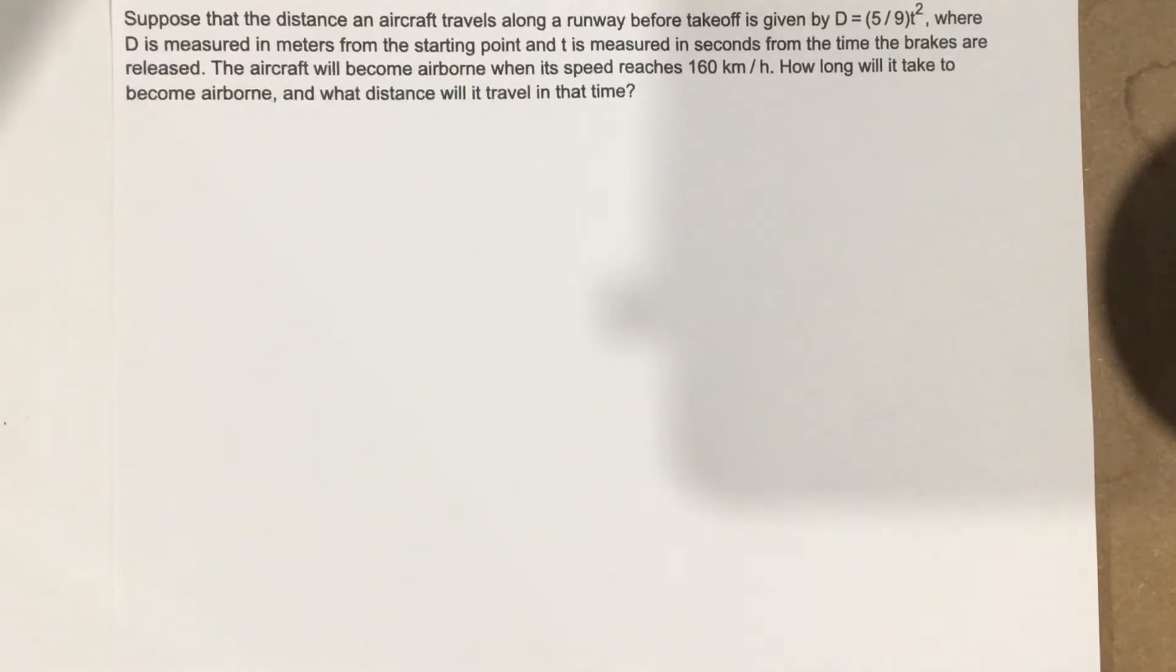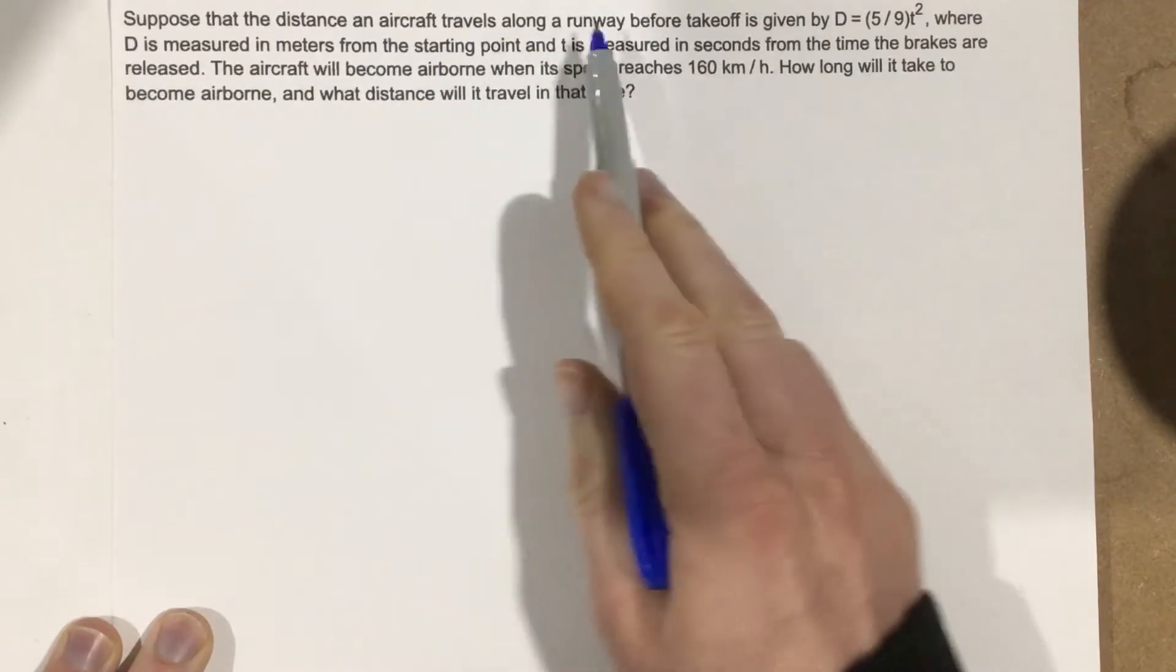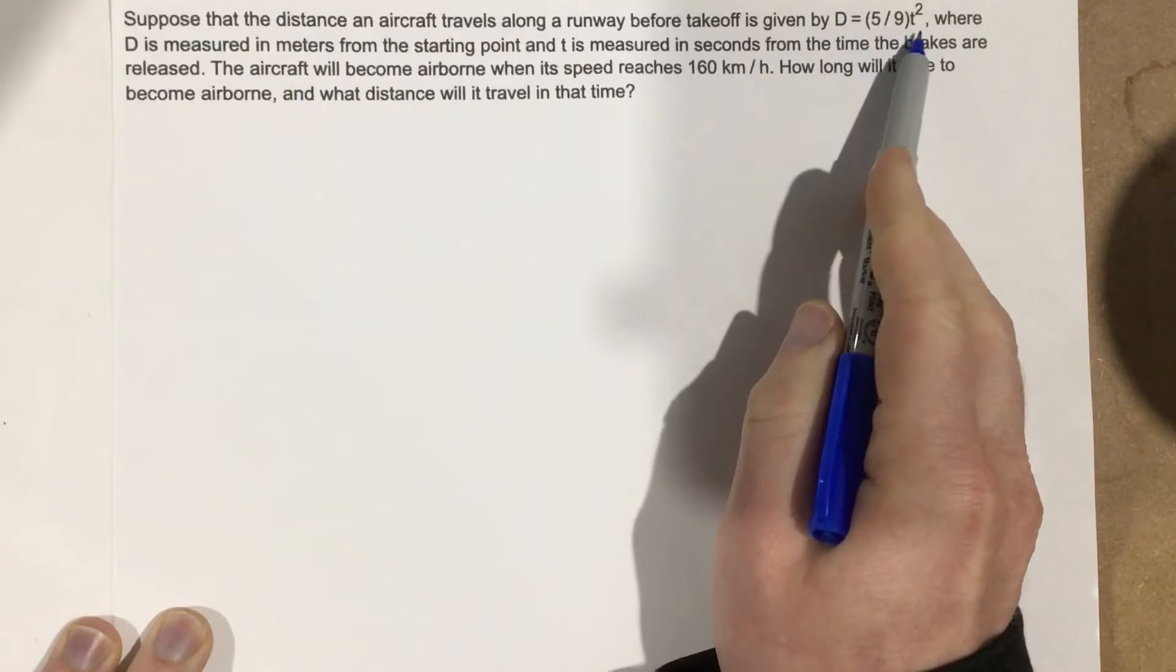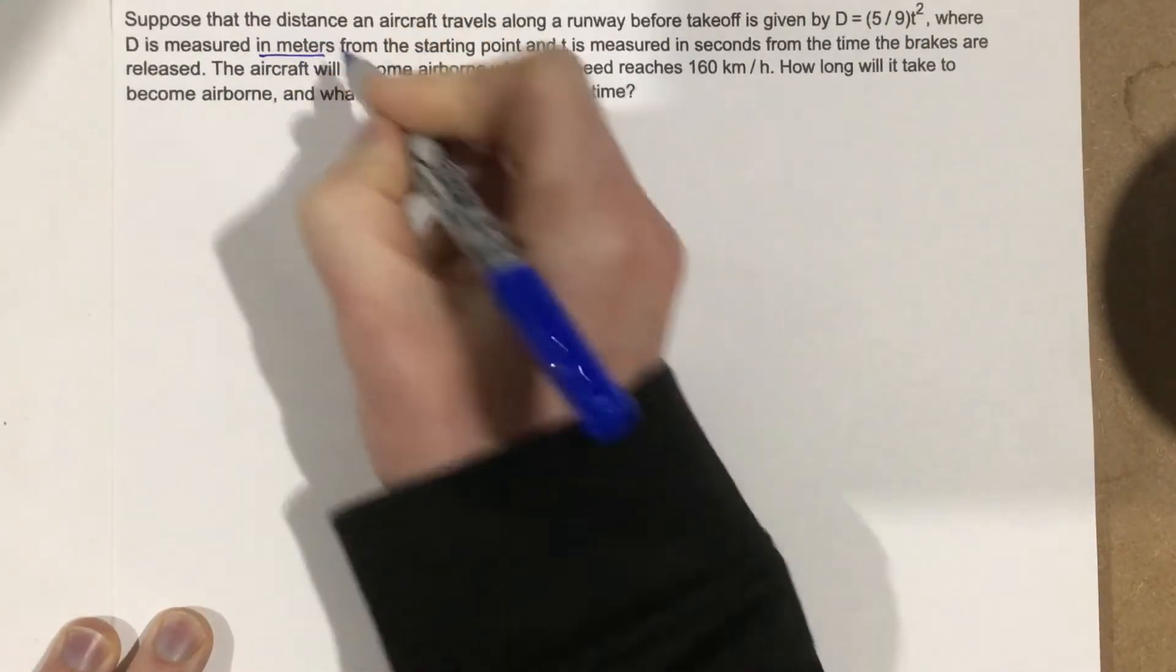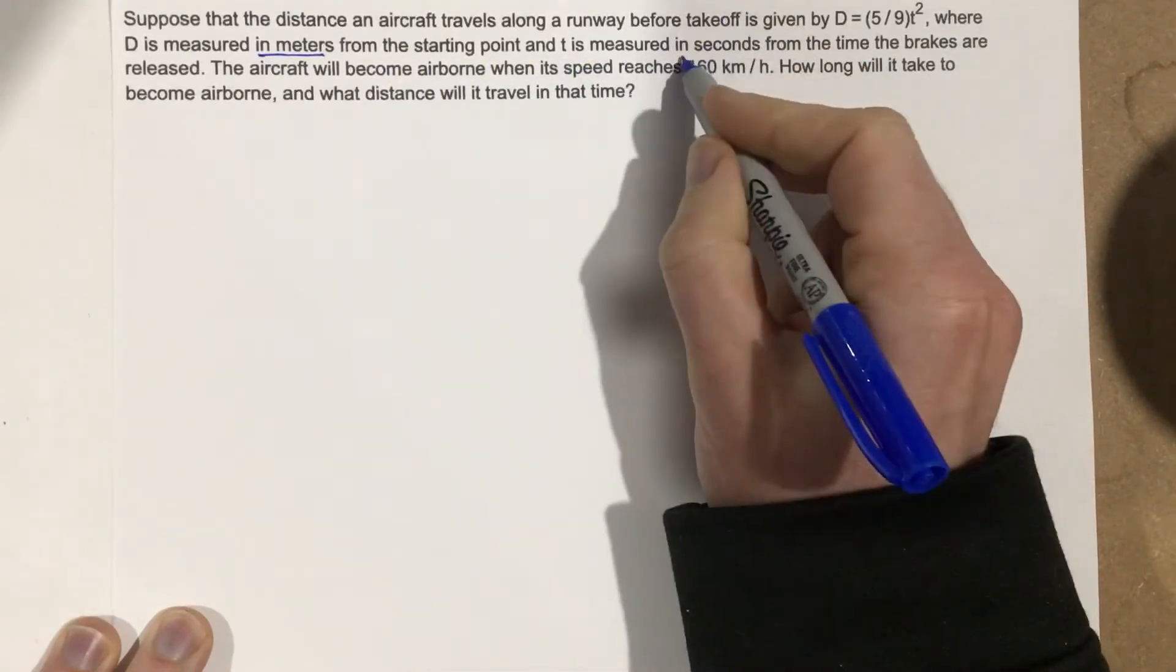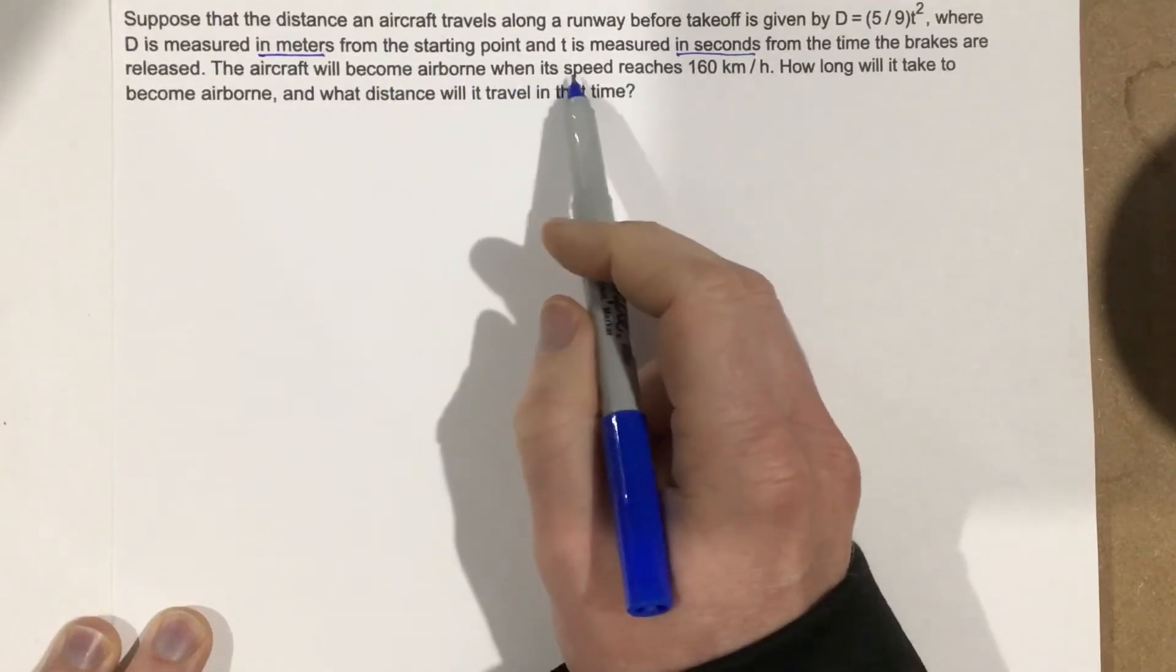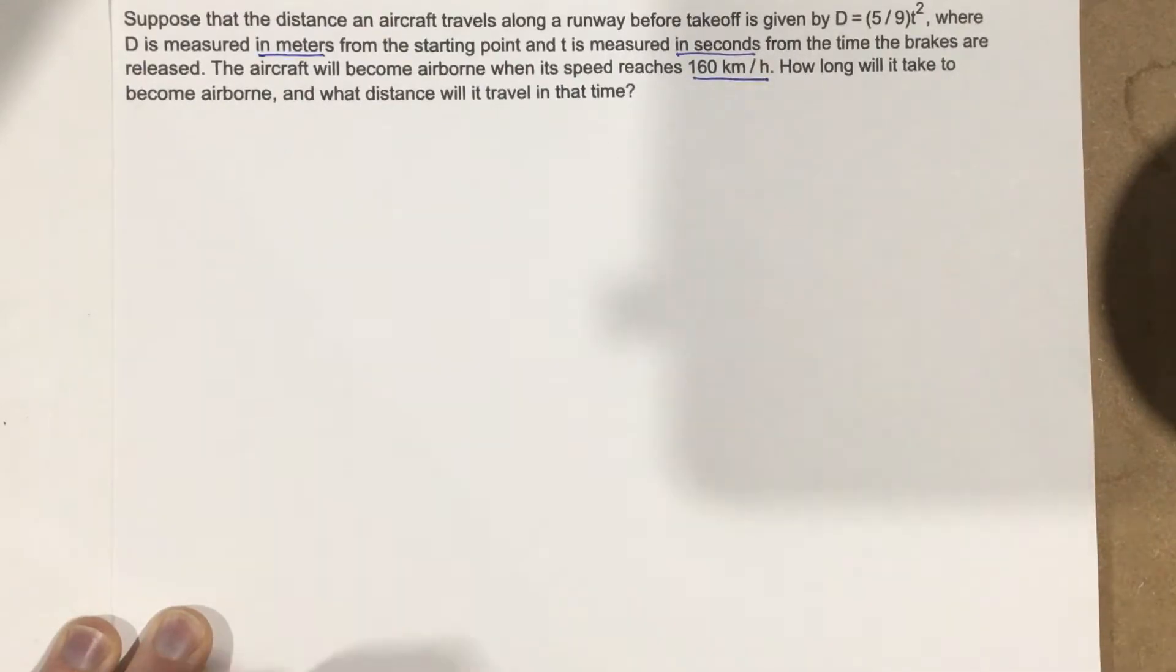This is problem number eight for section 3.4. The problem says suppose that the distance an aircraft travels along a runway before takeoff is given by d equals five ninths t squared, where d is measured in meters from the starting point and t is measured in seconds from the time the brakes are released. The aircraft will become airborne when its speed reaches 160 kilometers per hour. How long will it take to become airborne and what distance will it travel in that time?